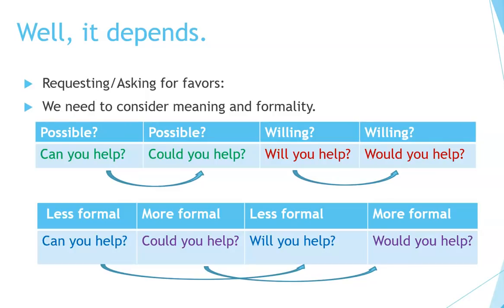Let's look at meaning first. If you want to ask if something is possible, you can use can or could. 'Can you help?' 'Could you help?' If you want to ask if the other person is willing to do it, you can say something like 'Will you help?' or 'Would you help?' So in those cases, can and could are similar, and will and would are similar. But if we're talking about formality, it's a little bit different. For less formal situations, you can say 'Can you help?' or 'Will you help?' For more formal situations, you say 'Could you help?' or 'Would you help?' So be aware of these differences.